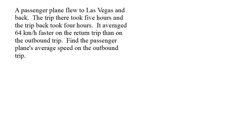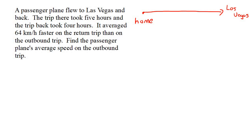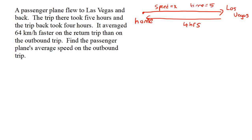Here's another one. A passenger plane flew to Las Vegas and back. The trip there took five hours and the trip coming home took four hours. It averaged 64 kilometers per hour faster on the return trip, so the return was faster. Let's say the speed going there is x, and the time is five. The return time was four, and since it came back faster, the speed will be x plus 64. Don't say 64x, because that's multiplying — you just want x plus 64.